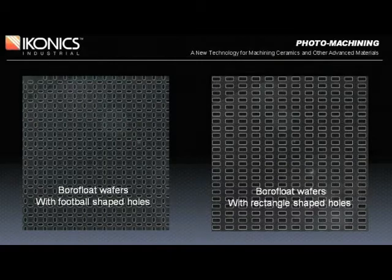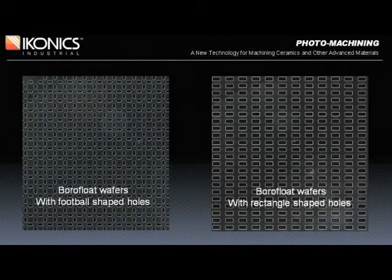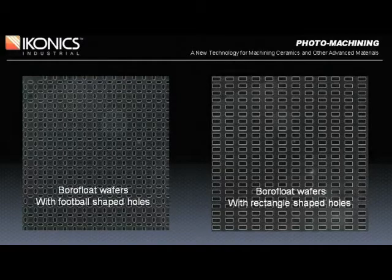Through holes do not have to be round. The bore float wafer on the left has football-shaped holes, while those on the right are rectangular but with rounded corners. These shapes were selected by the customer to minimize chipping, eliminating the sharp corners associated with square or rectangular holes. This is another example where the flexibility of photo machining can be employed to more effectively align with customer needs.